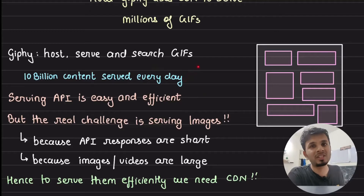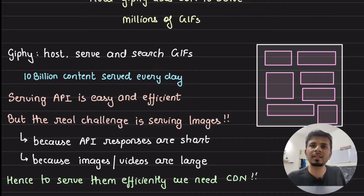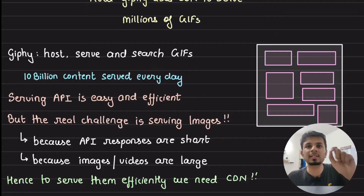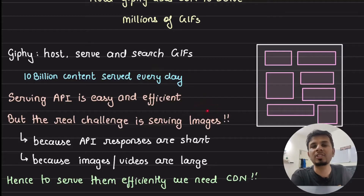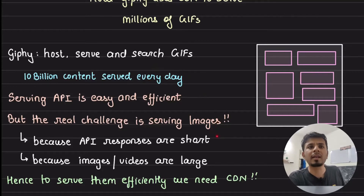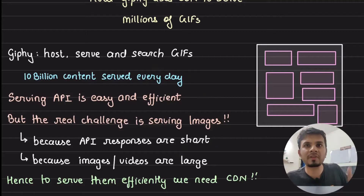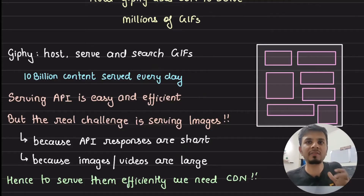Giphy can host, serve and search GIFs. It serves 10 billion media content every single day. Serving APIs is a relatively easier job — given a request, you send a JSON response. These JSON responses are tiny, hardly 1 KB to 3 KB. You can guarantee millisecond-level response times from your backend servers. But the real challenge for a company like Giphy is serving images like GIFs and videos, because images could be 512 KB, 1 MB, 2 MB, or 5 MB big. Same goes with videos.